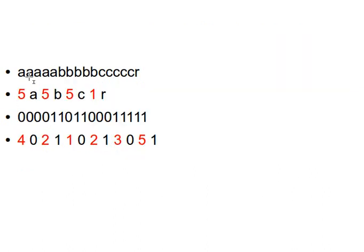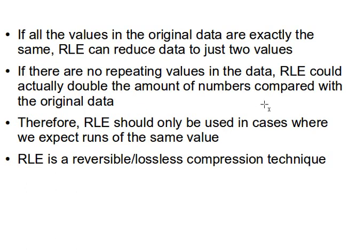But if there are no repetitions — imagine a string like 0 1 0 1 0 1 0 1 — what will happen is we will have a count for every single value, and in that case we will double the amount of numbers compared with the original data. That is the worst case. The best case is when all data is the same and we end up with two values; the worst case is no repetitions, where we double the data because for every single value we need a count.